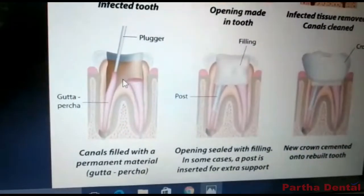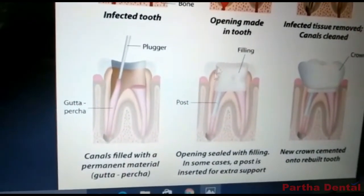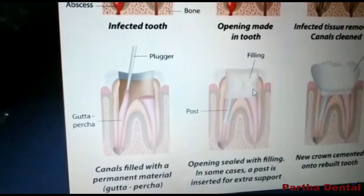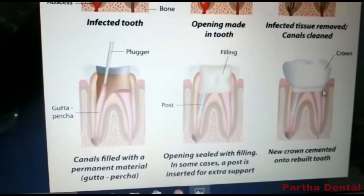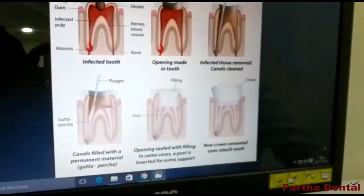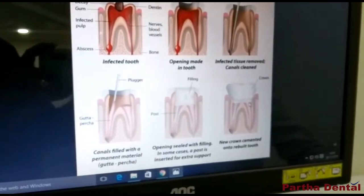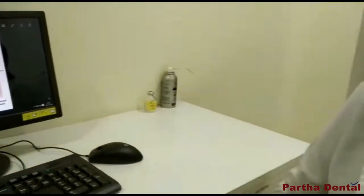After the filling, the restoration is sealed, a permanent restoration is given, and a crown is placed on top so that you can preserve your tooth in a better way and the tooth doesn't become brittle or break down. Depending upon the infection of the tooth, your doctor may proceed with the root canal procedure over two to three visits.